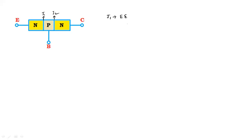J1 is the first junction — it is a combination of the emitter and the base, and can also be called the emitter junction. J2 is a combination of the collector and the base, and this junction J2 can also be called the collector junction.